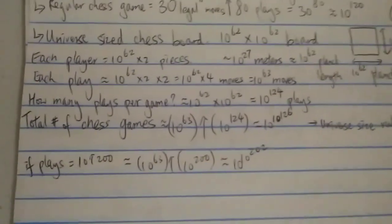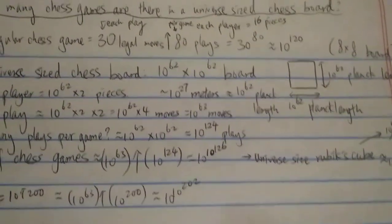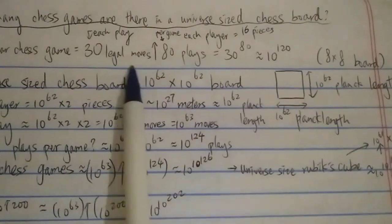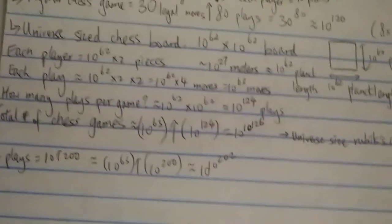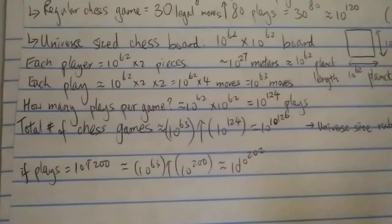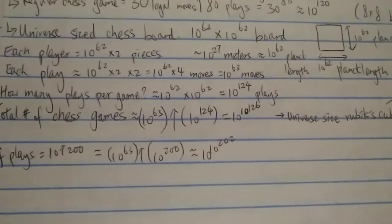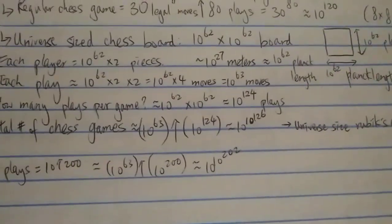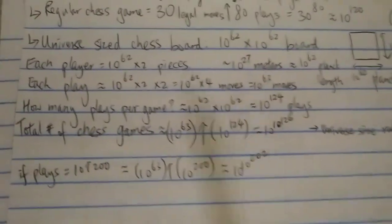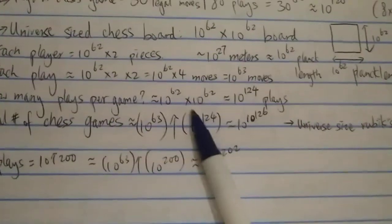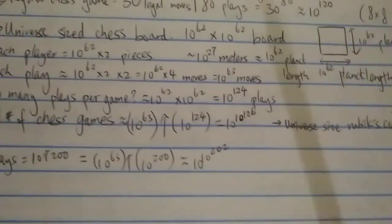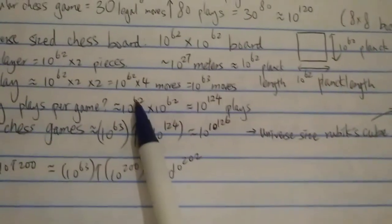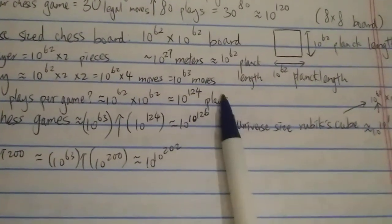How many plays per game? That's a much more difficult question. Shannon estimated a regular chess game has 80 plays. Since our board is the size of the universe, each pawn can only move one square at a time, so a pawn would take around 10 to the 62 moves to get to the other side. My estimate is around 10 to the 62 times 10 to the 62 plays, since there are also 10 to the 62 pieces. So that gives around 10 to the 124 plays per game.